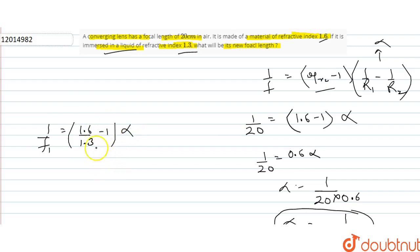Now alpha is 1/12. So this is 1.6 minus 1.3, which is 0.3 divided by 1.3 into alpha 1/12. So this is 3/13 times 1/12. This simplifies to 1/52, so the value of f1 is 52 cm. That's our answer.